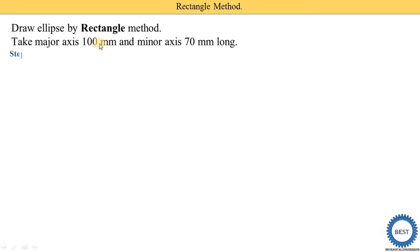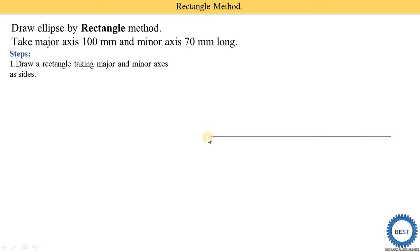Here the major axis is given as 100 mm and the minor axis is given as 70 mm. The first step is to draw a rectangle taking the major and minor axis as its sides. First, draw the major axis — its dimension is 100 mm, which means 10 centimeters. Using a scale and pencil, draw one horizontal line with a dimension of 100 mm, then label it: this point is A and here is B.